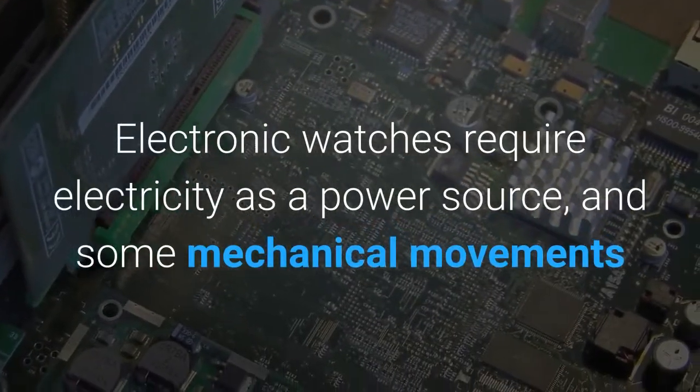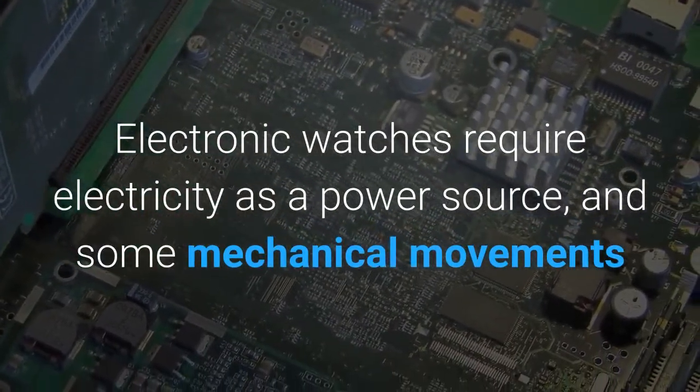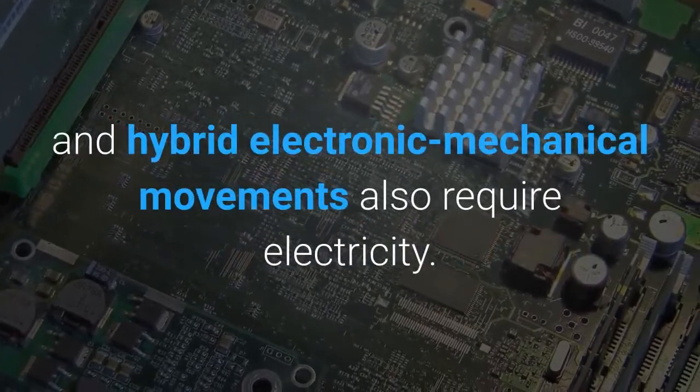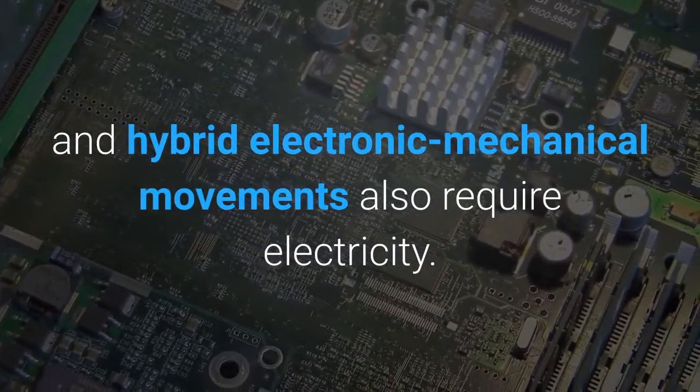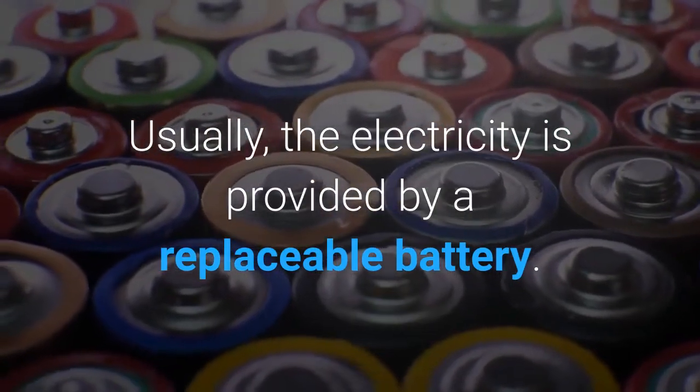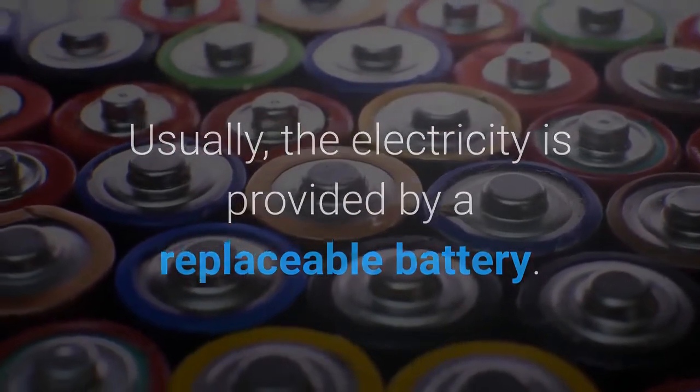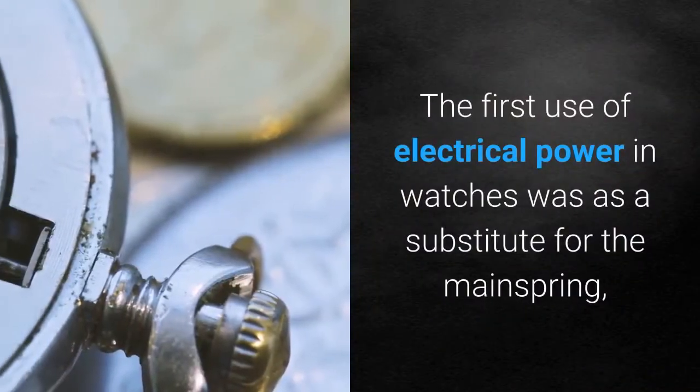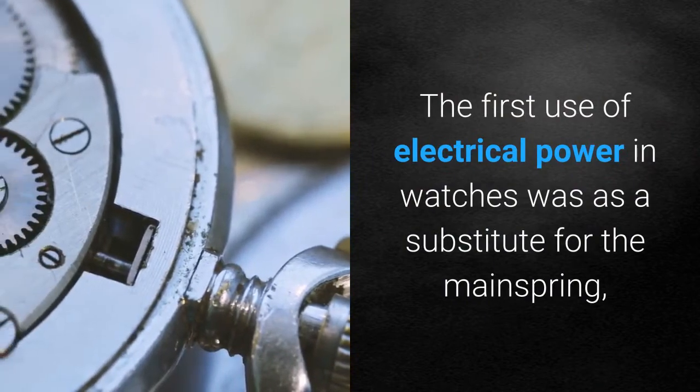Electronic watches require electricity as a power source, and some mechanical movements and hybrid electronic-mechanical movements also require electricity. Usually, the electricity is provided by a replaceable battery. The first use of electrical power in watches was as a substitute for the mainspring.